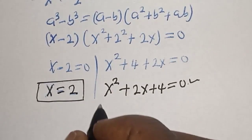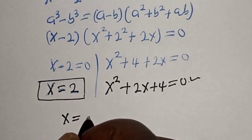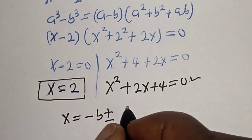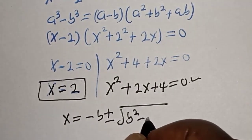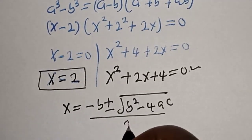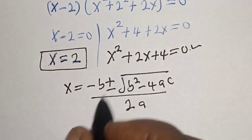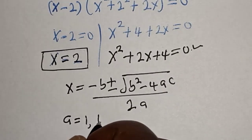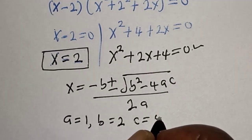The quadratic formula gives us s is equal to minus b plus or minus square root of b squared minus 4ac, divided by 2a. From the equation s squared plus 2s plus 4 equals 0, we identify a is equal to 1, b is equal to 2, and c is equal to 4.